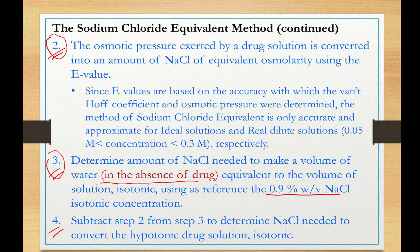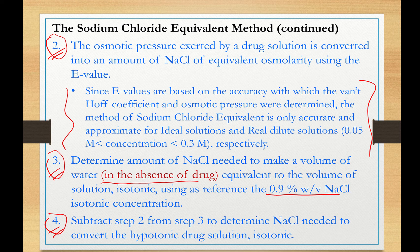Step 3 calculates the osmotic pressure exerted by an isotonic saline solution for the specific volume of that solution. Step 4 is the difference of Step 3 minus Step 2 and determines the amount of sodium chloride needed in the presence of the drug to convert the hypotonic drug solution into isotonic. This method is very accurate for ideal solutions, but for real dilute solutions it's approximate — though that approximation is pretty good.